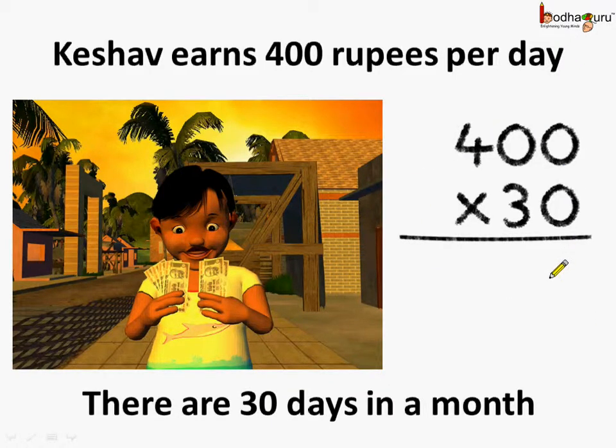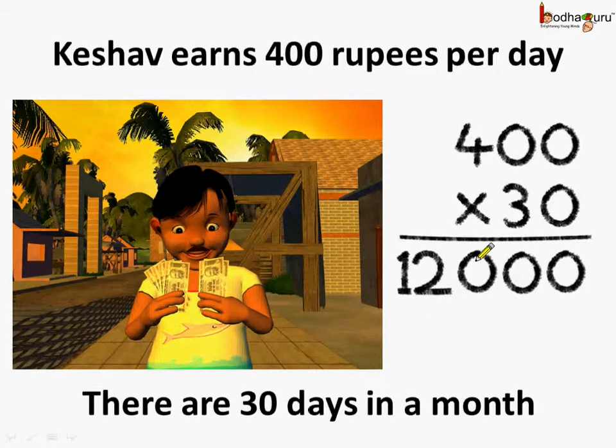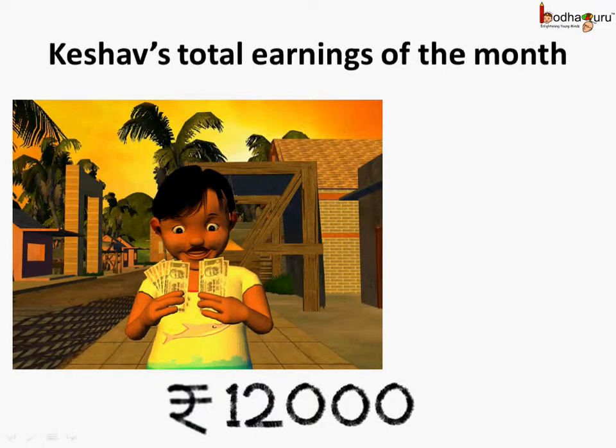Multiplying we get 3 zeros and 3 fours are 12. So how much did he earn in 30 days? It is 12,000. So Keshav's total earning of the month is equal to Rs. 12,000.